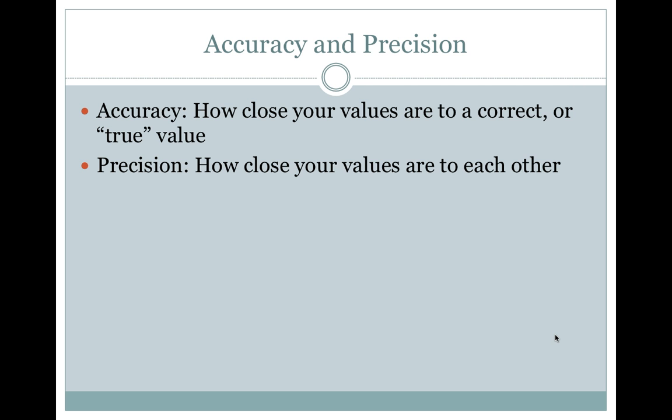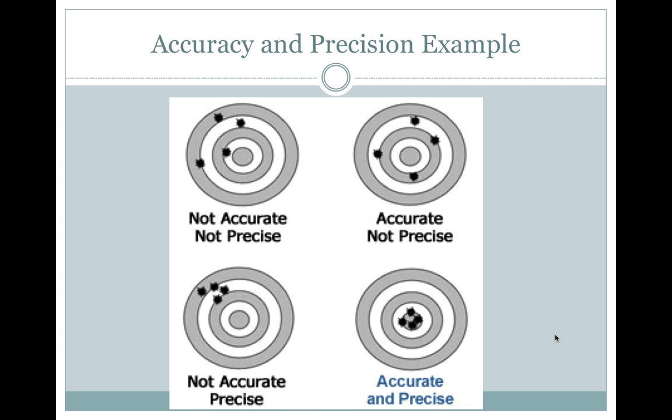Accuracy and Precision. Accuracy is how close your values are to a true value, or Precision is how close your values are to each other. Here's an example. The values aren't close to each other and they're also not close to the middle, so they're not accurate or precise. Down here you can see how they're close together, so they're precise, but they're also close to the target, so they're accurate. Here, they're close together, so they're precise, but they're far away from the target, so they're not accurate.